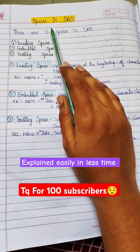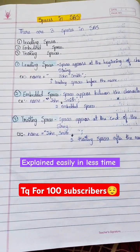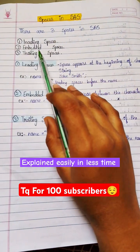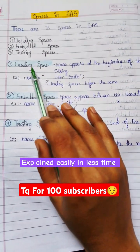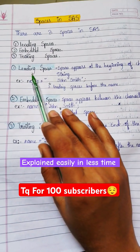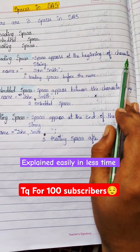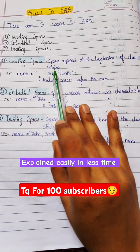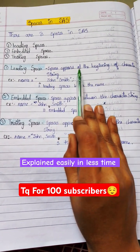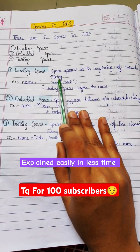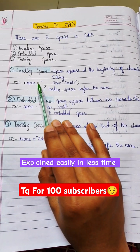We will talk about spaces in SAS. There are three spaces in SAS: leading spaces, embedded spaces, and trailing spaces. First, we'll talk about leading spaces. Spaces that appear at the beginning of a character string are nothing but leading spaces. You can see the example here.